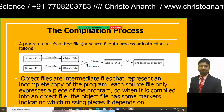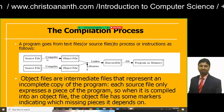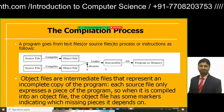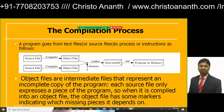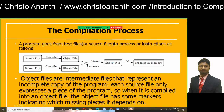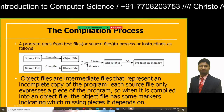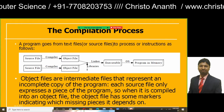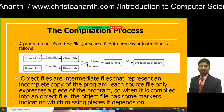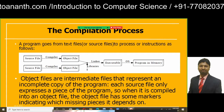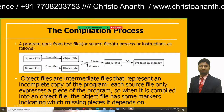Regarding the compilation process: a program can have different source files that are fed into object files via the compiler. After the compiler, it goes to the linker, which has access to low-level and medium-level libraries, then it is executed via executables and fed into the operating system where it is loaded into program memory. Object files are intermediate files representing an incomplete copy of the program. Each source file expresses a small piece of the program, and the object file contains markers indicating missing pieces.